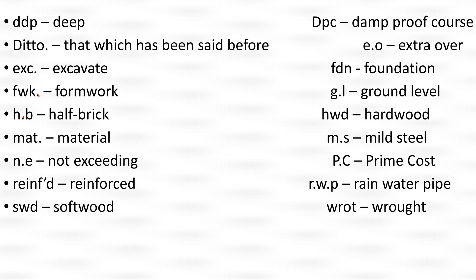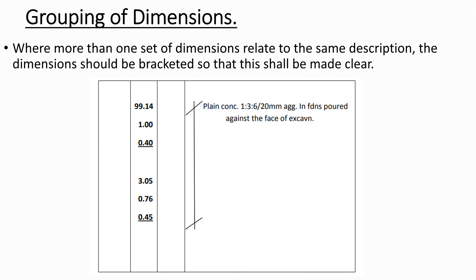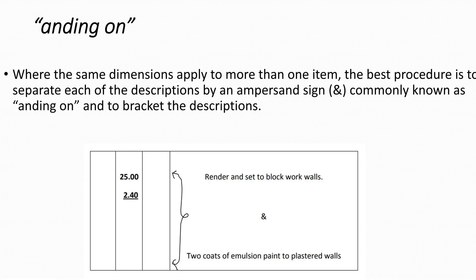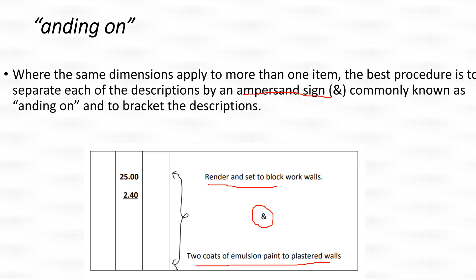When measuring the same thing across two different items, we use brackets to group them — meaning one description serves two volumes, entered as length, width, height or depth. Where the same dimensions apply to more than one item, we use an ampersand sign. For example, 'render and set to blockwork walls' ampersand 'two coats of emulsion paint to plastered walls' — because they share the same dimensions. This is called adding on.